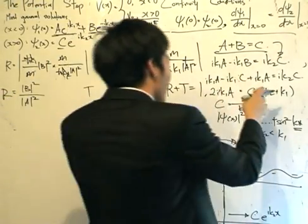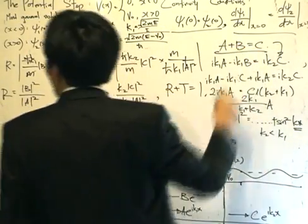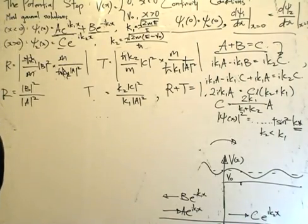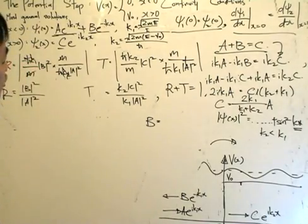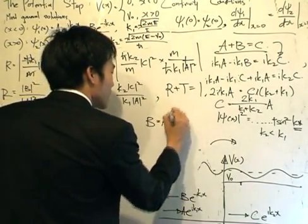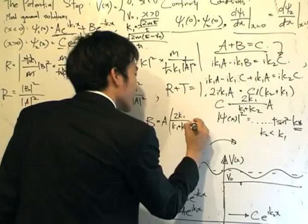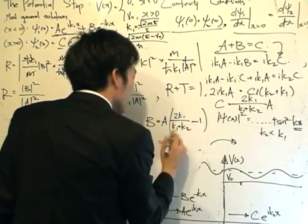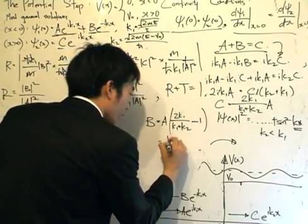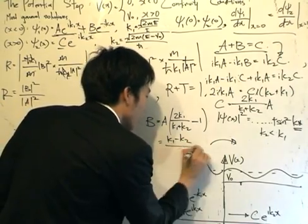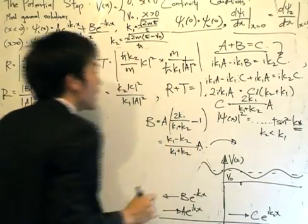I will substitute this back inside the first equation, and then what I would later get is B is equal to, remember, B is equal to C minus A, so I would bring out the A. C is given by that, so it's 2 K1 divided by K1 plus K2 minus 1, minus an A. That would give me, the K1 and K2 goes over here, 2 K1 minus K1, I will get K1, and I'll minus K2, divided by K1 plus K2 times A. There we go. The coefficients C and B are written in terms of A.